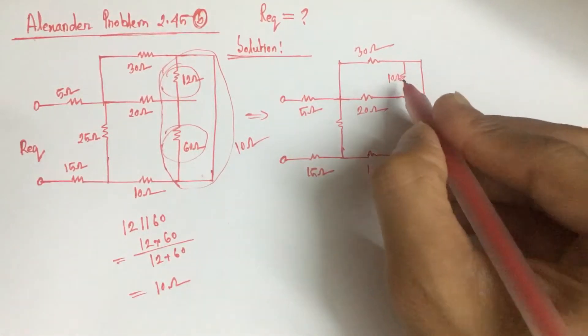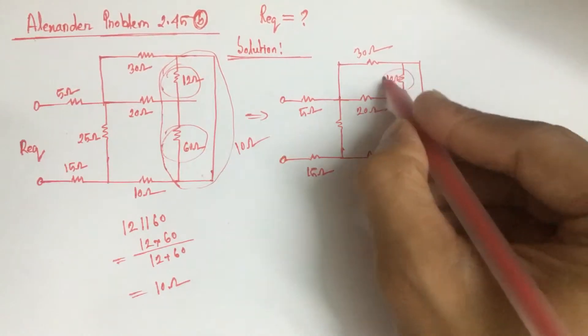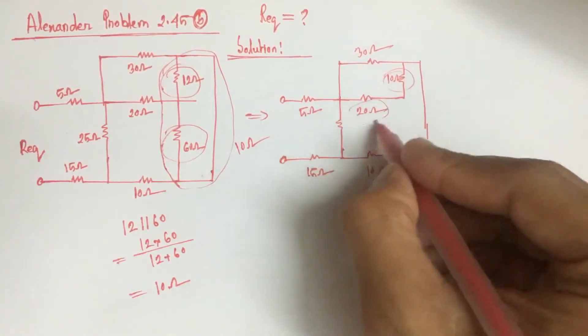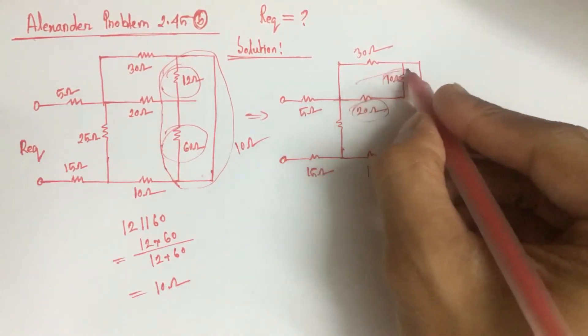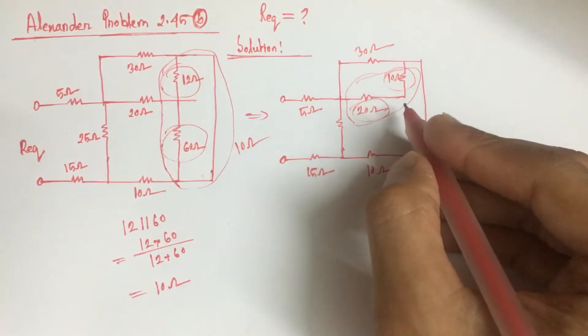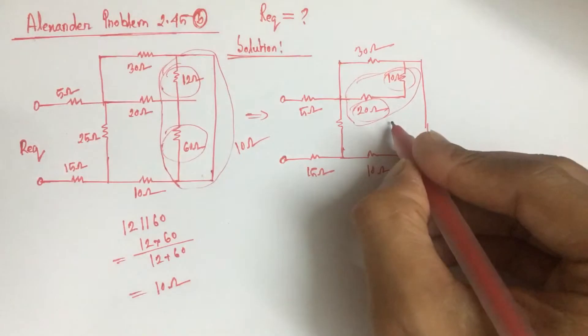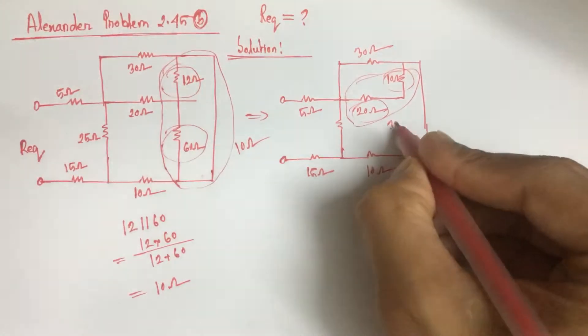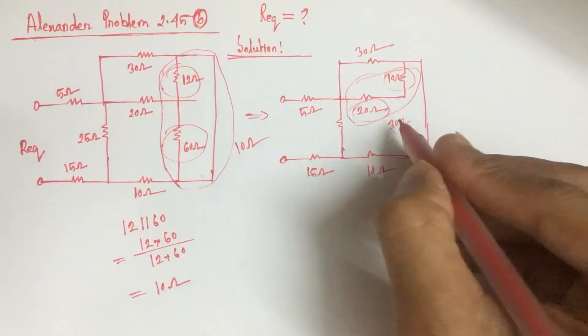Now, this 10 ohm is in series with this 20 ohm. So the equivalent resistance of these two resistances is 30 ohm.